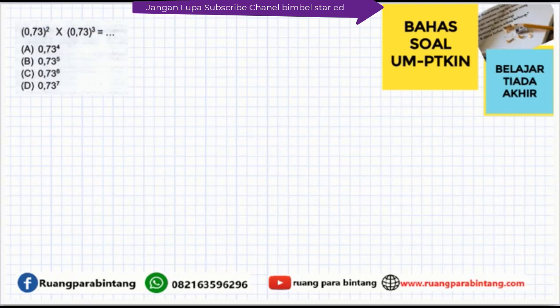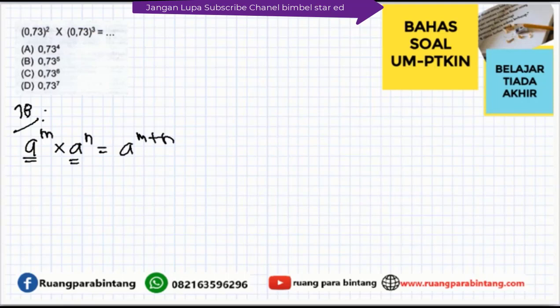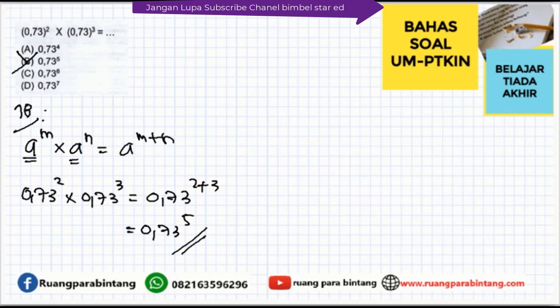Soal nomor 4: 0,73² dikali 0,73³ sama dengan apa? Pilihannya: 0,73⁴; 0,73⁵; 0,73⁶; 0,73⁷. Konsepnya: jika a^m dikali a^n dengan basis sama, maka pangkatnya kita jumlah, menjadi a^(m+n). Jadi 0,73² × 0,73³ = 0,73^(2+3) = 0,73⁵. Jawabannya adalah opsi B. Sangat mudah. Mudah-mudahan bisa dipahami.